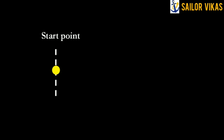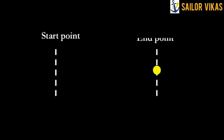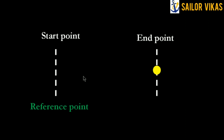Before understanding ground stabilization and sea stabilization, I am going to explain a small concept. Here you can see there is a start point and a yellow sphere. I am going to move this yellow sphere and mark its end point. Now, to know the speed of this yellow sphere, I need to know the start point and the time taken — the start point is nothing but a reference point. Whenever we want to know the speed of any object or vessel, we need to know the reference point from where we should measure.